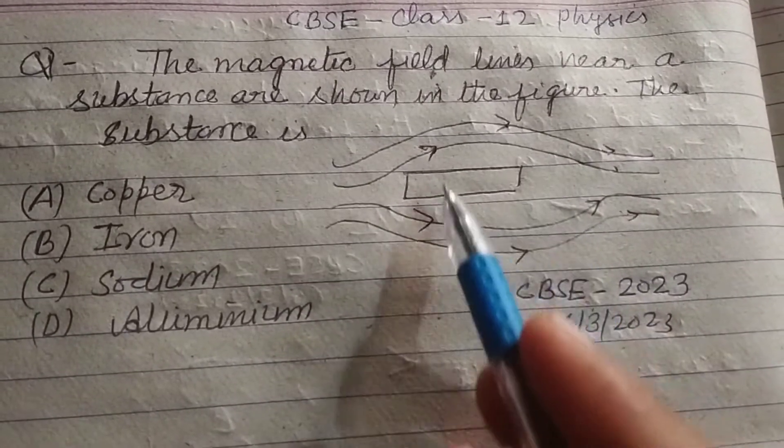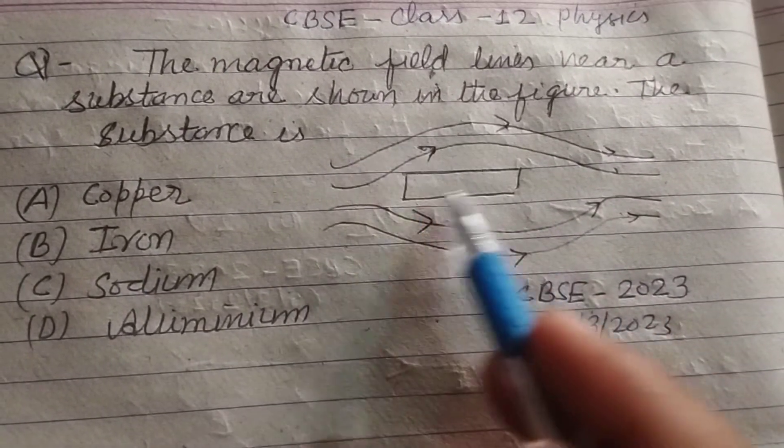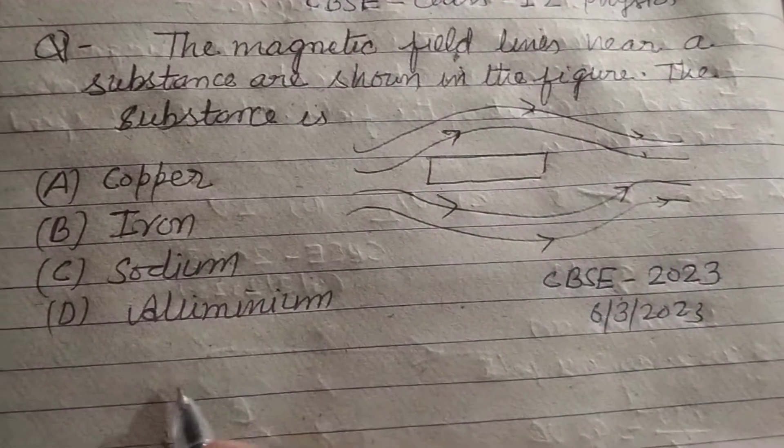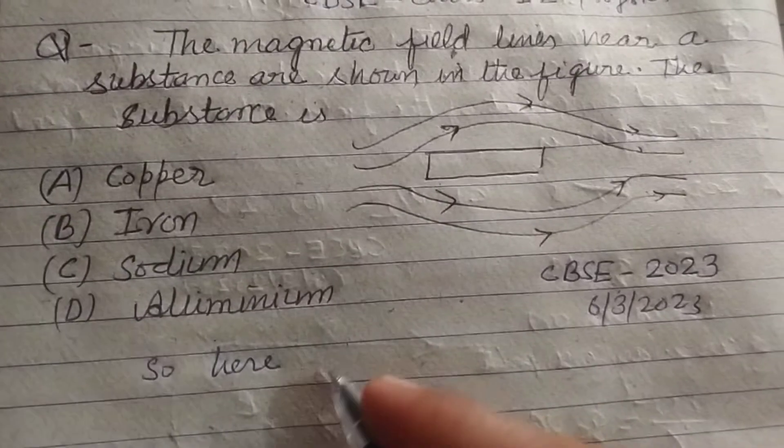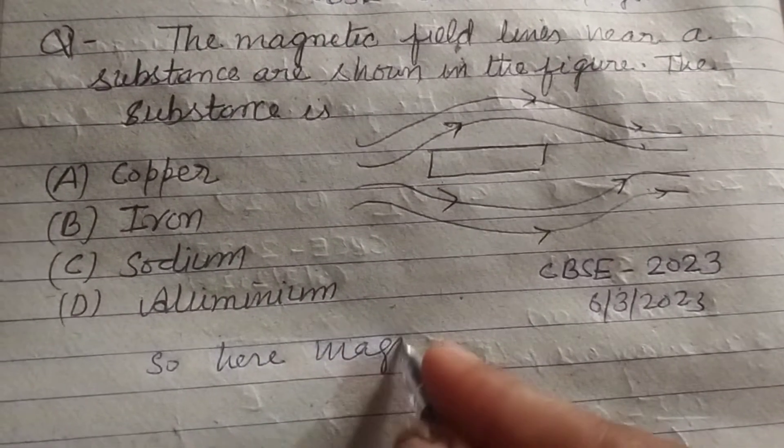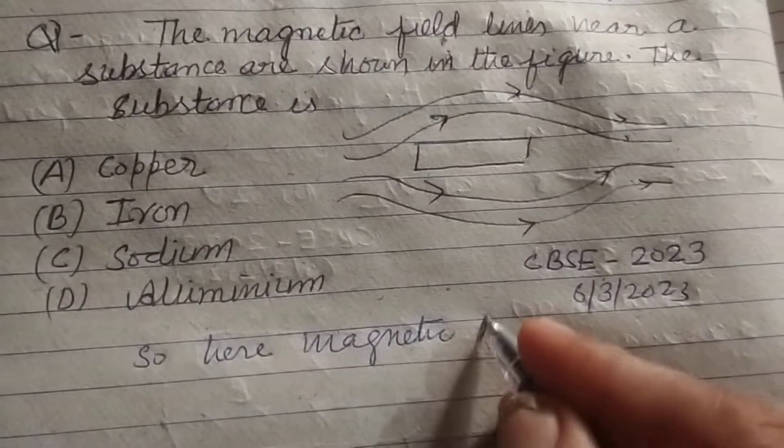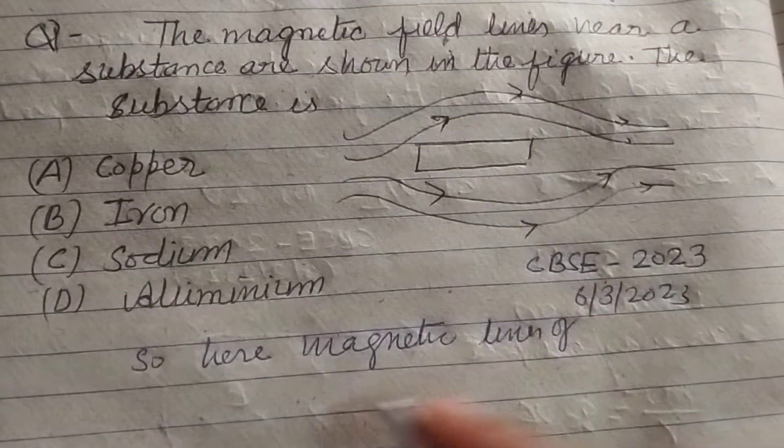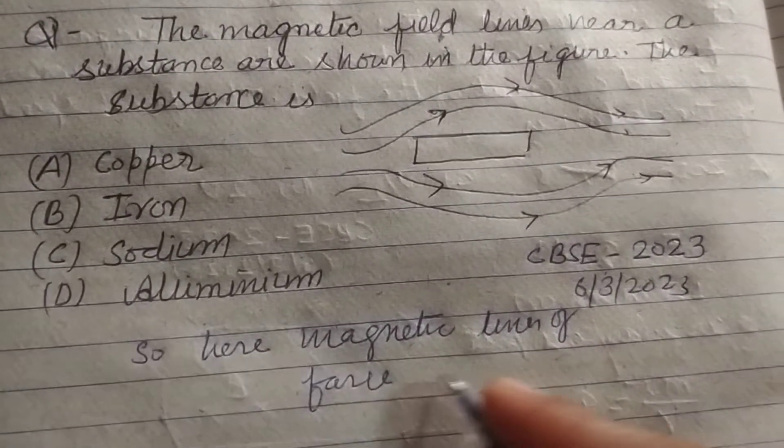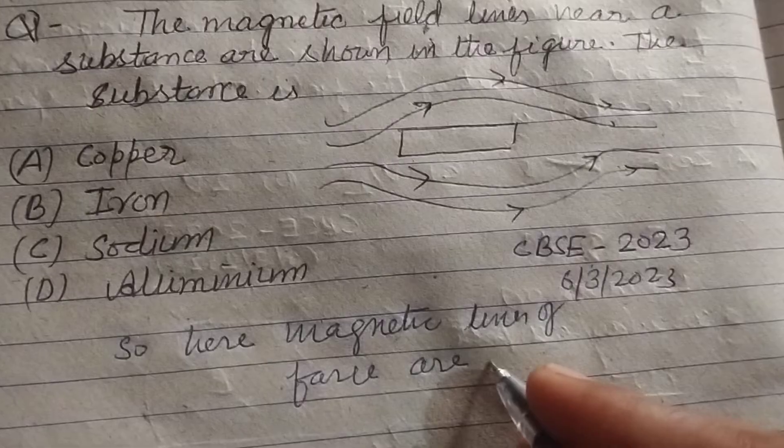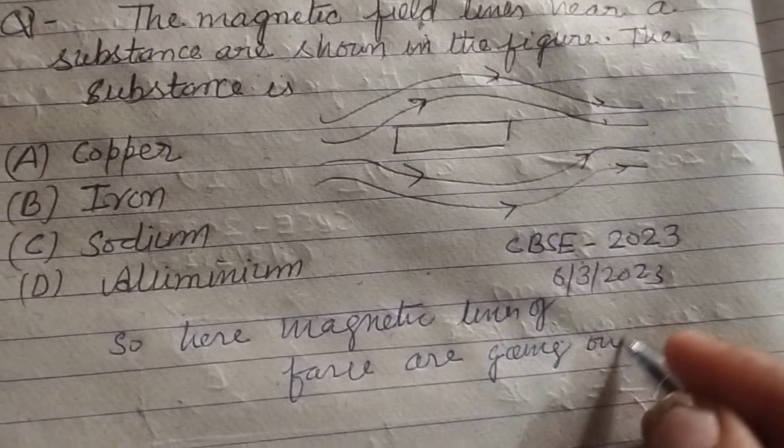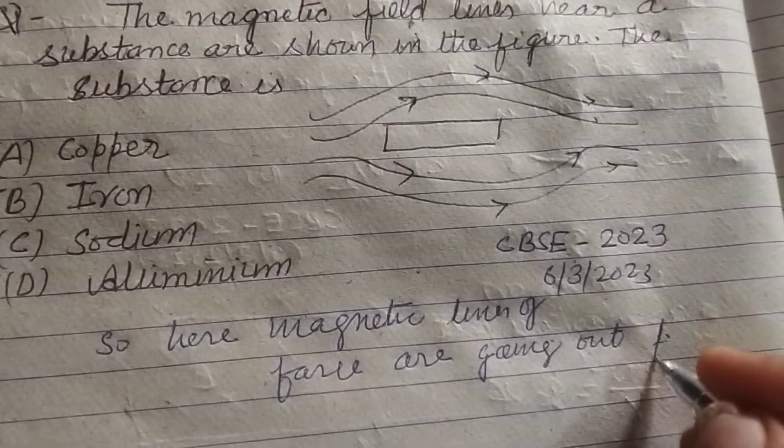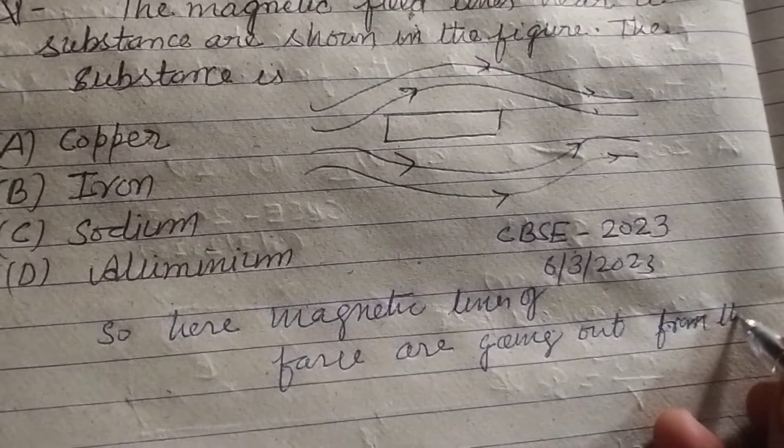This is the substance from which the magnetic field lines are going in an outward direction. So here, magnetic lines of force are going out from the substance.